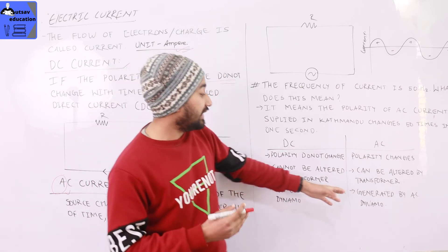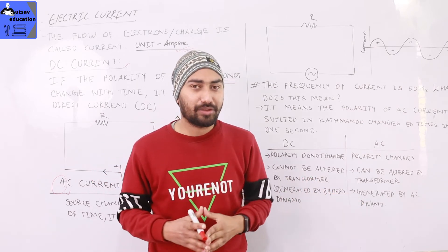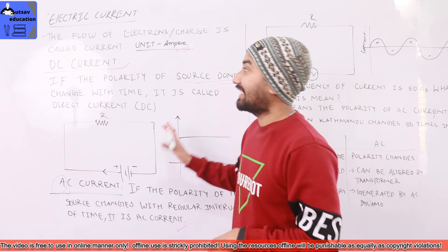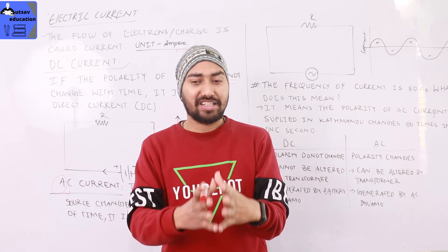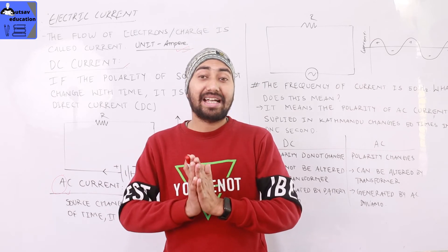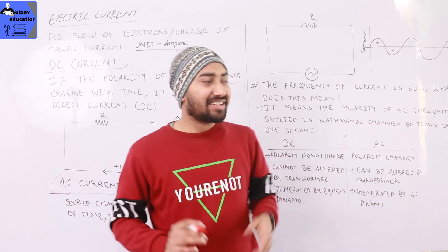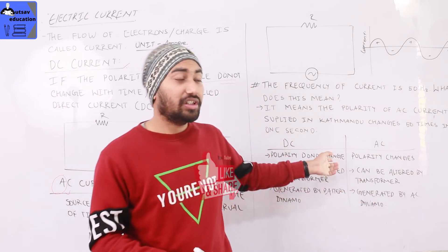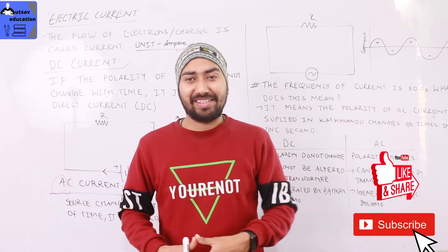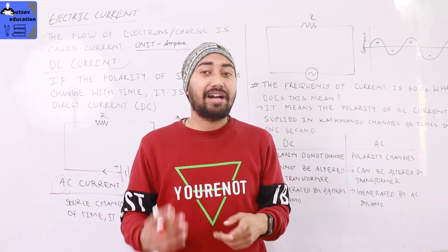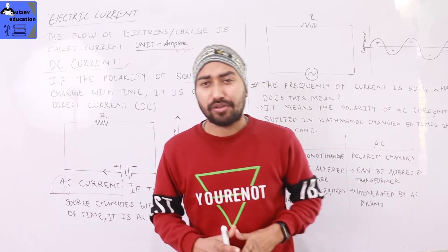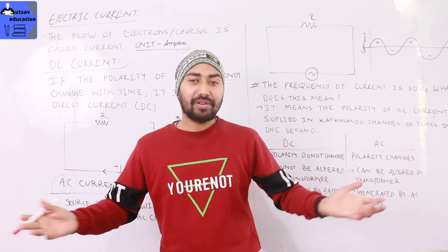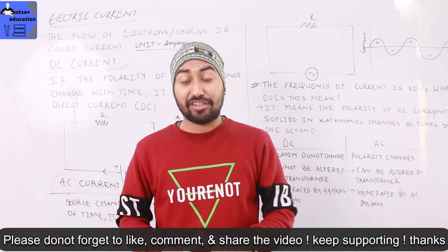This is the basic definition of AC and DC current, and this is the introduction part of electric current. We will also cover the effects of current — heating effects, magnetic effects, and chemical effects — in the next class. This is the DC and AC current definition. If you have any questions, comment below. Like, share, subscribe, and hit the bell icon. Stay home, stay safe, and see you in the next video. Goodbye.